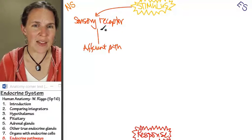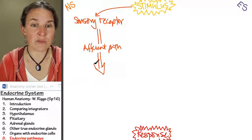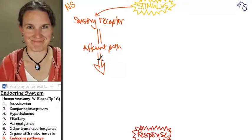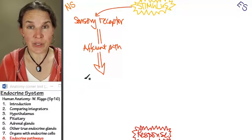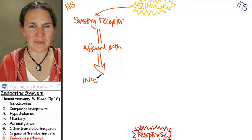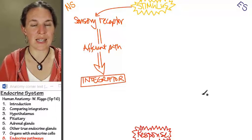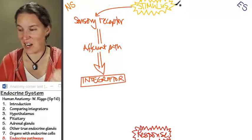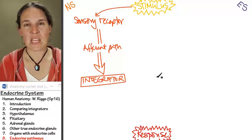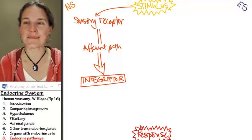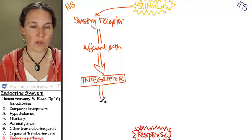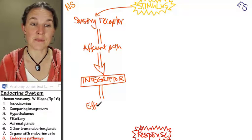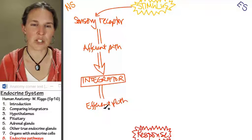And the afferent path was what? Some kind of nerve. The afferent path takes the message to whom? So we're going to move to a neural integrator, or let's just say integrator, because we will see that pathways can get totally complicated, and neural pathways and endocrine pathways can actually interact with each other.